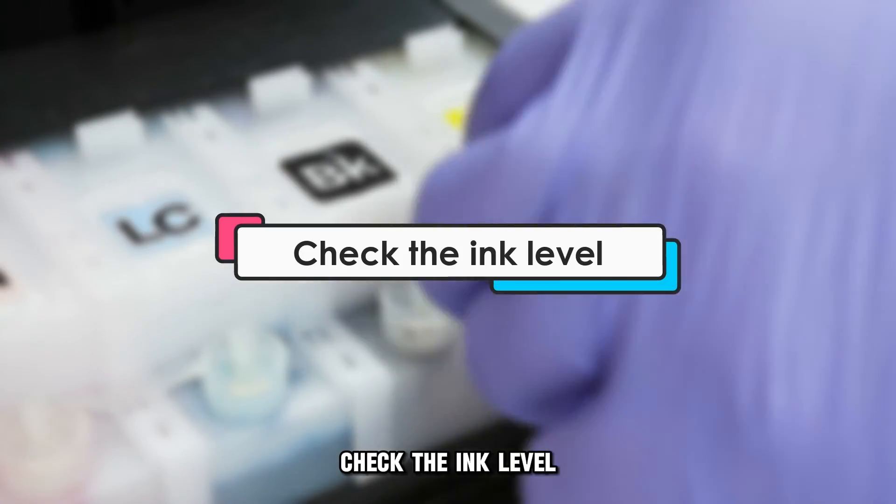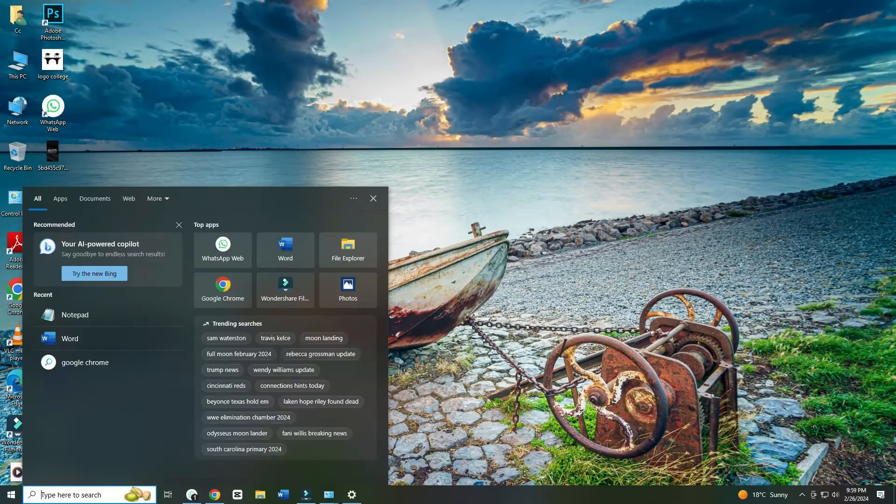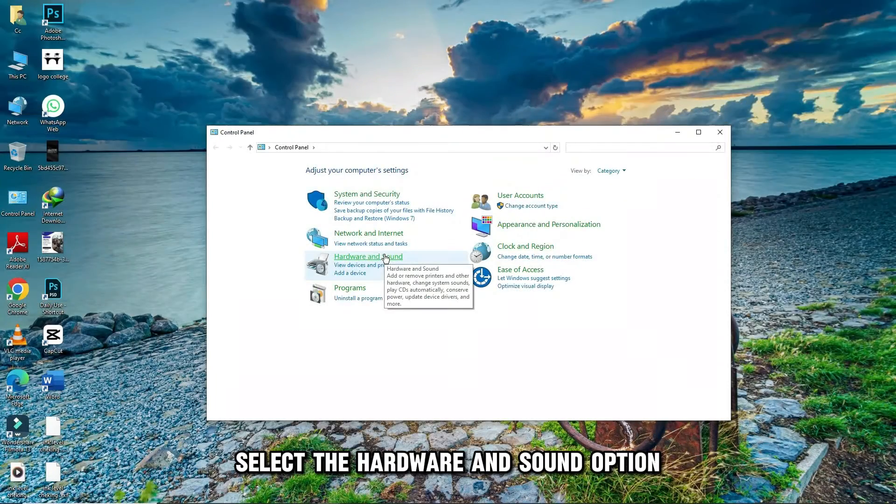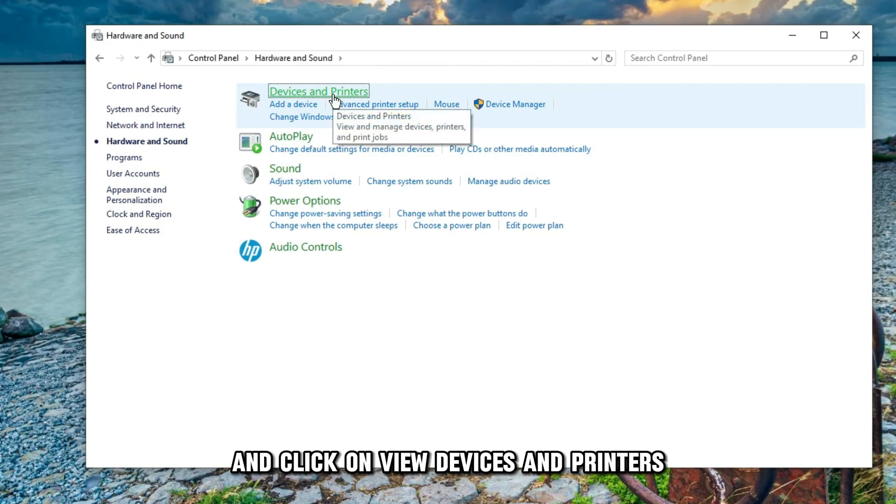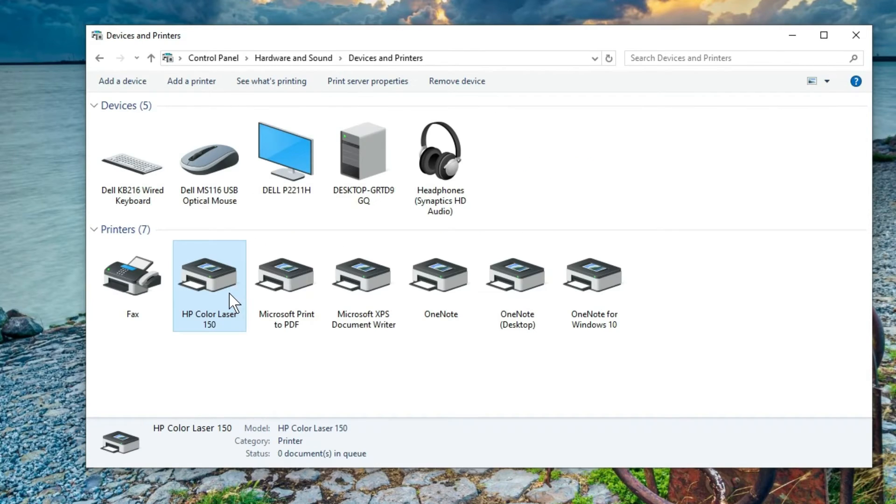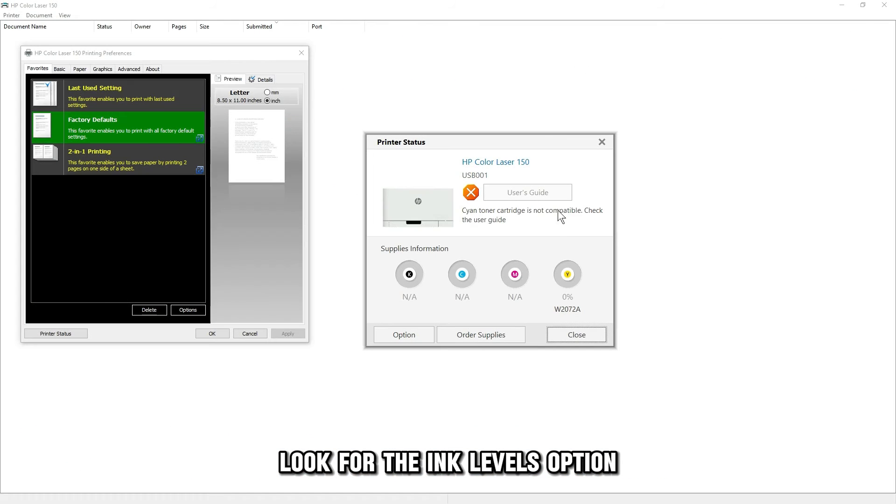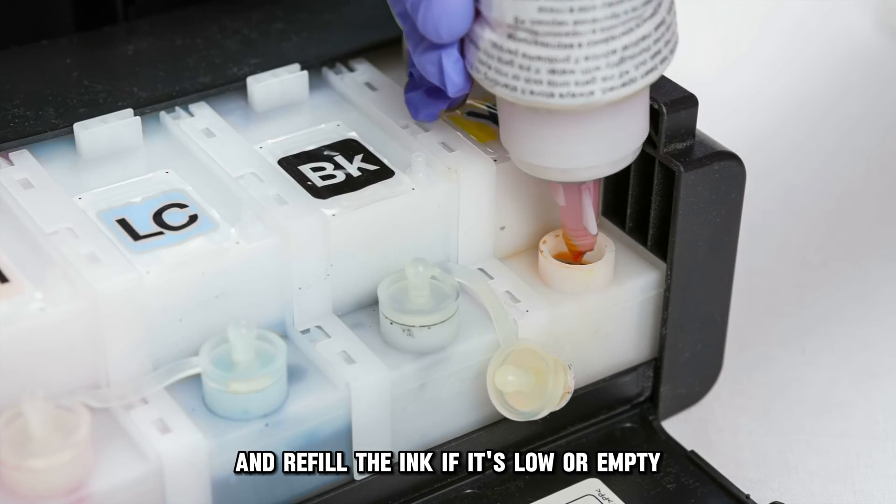Check the ink level. Turn on your printer and computer. Press the Windows key and search for the control panel. Select the hardware and sound option and click on view devices and printers. Select your printer from the displayed options. Look for the ink levels option. Check the ink levels and refill the ink if it's low or empty.